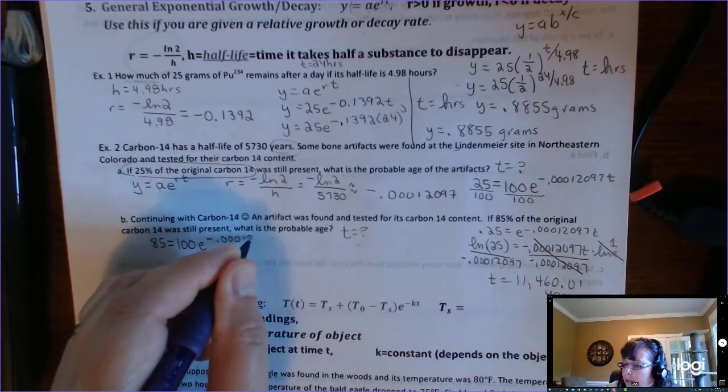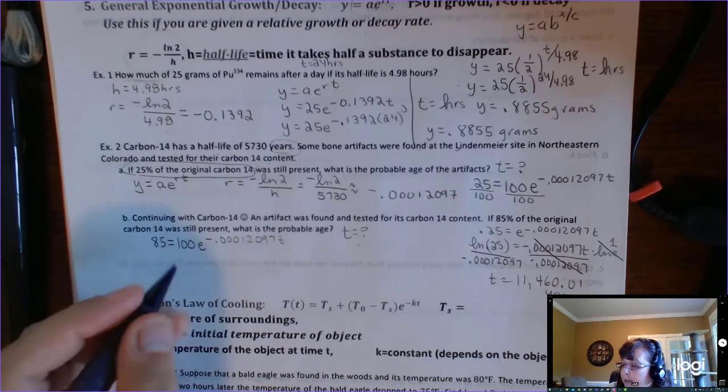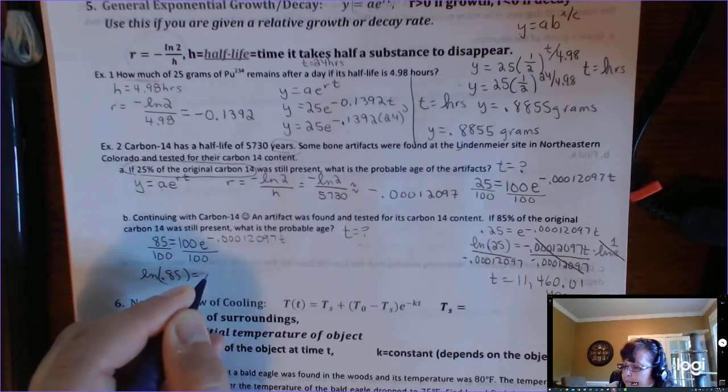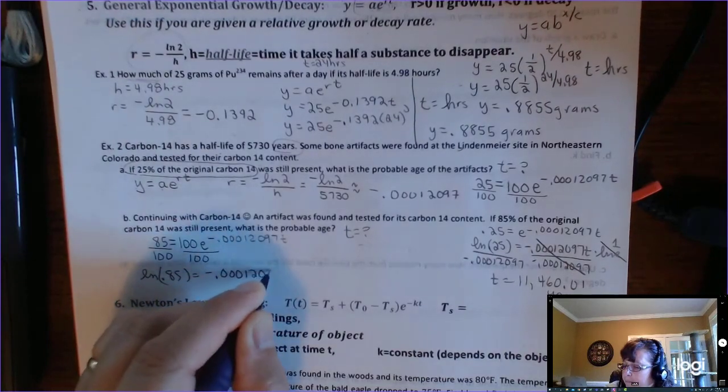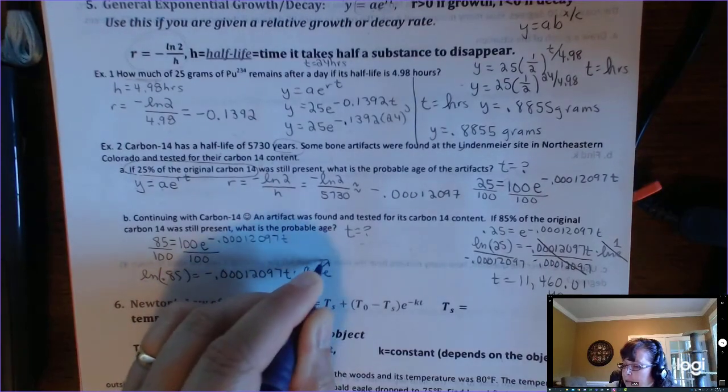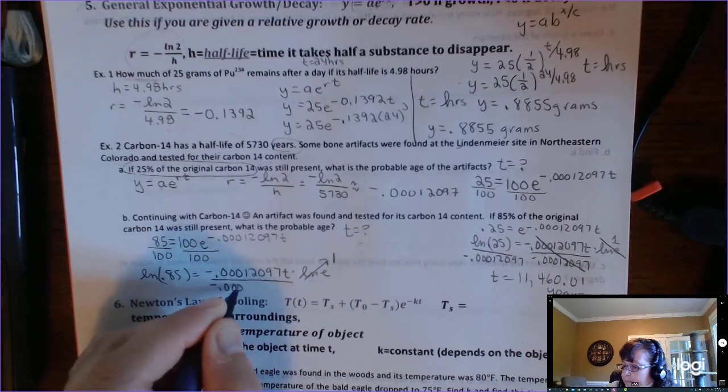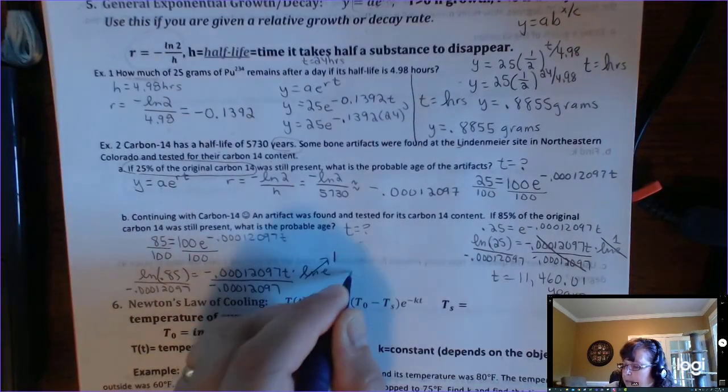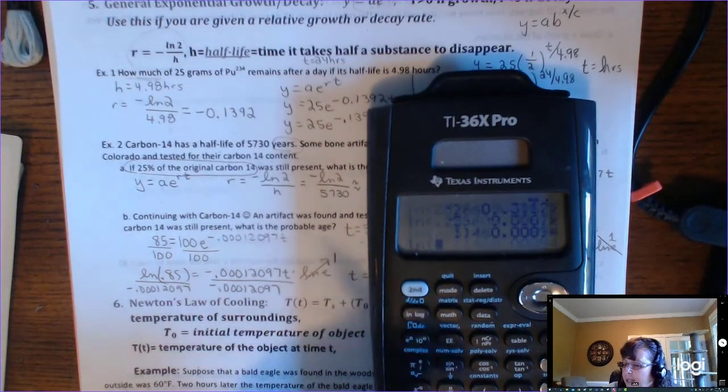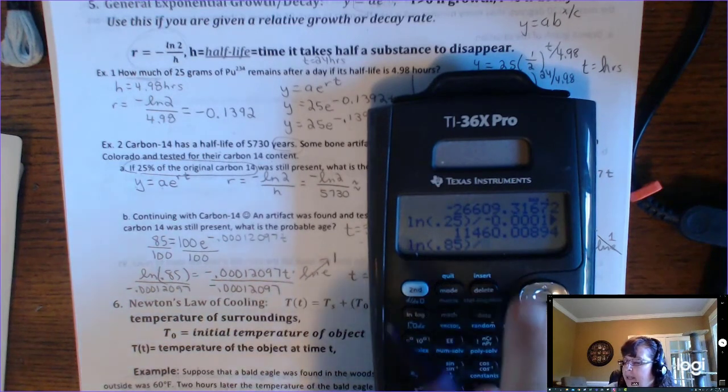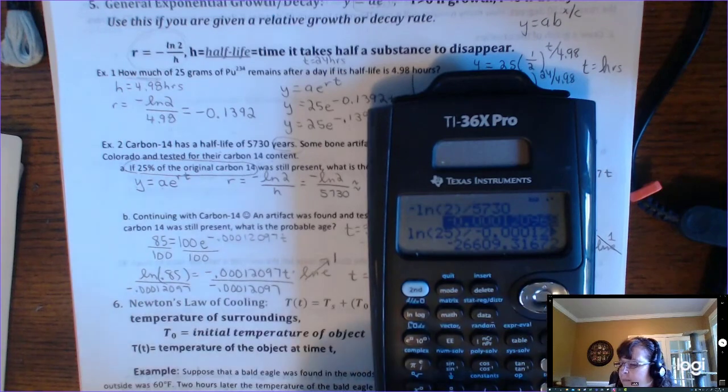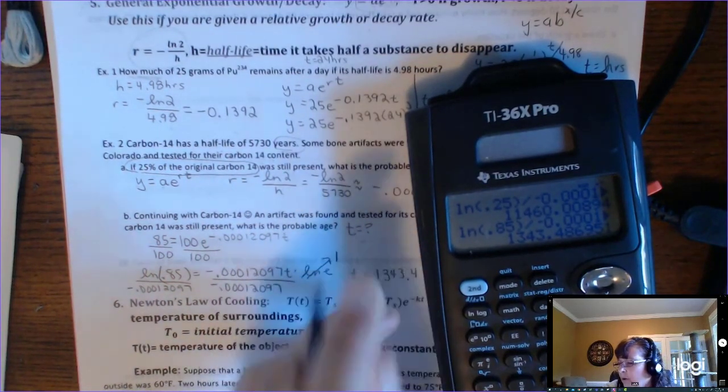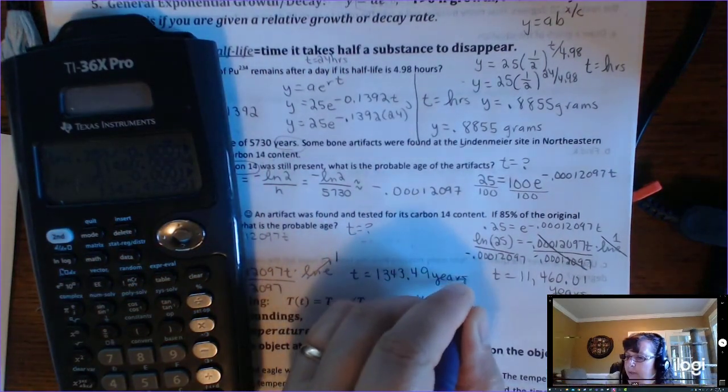E, we don't need to refigure R because it's the same element. It has the same half-life. So R is, again, going to be negative 0.00012097t. So we divide out the 100. Always divide out the initial value. Take the natural log of both sides. Use the power rule. Divide by R. And so t equals natural log of 0.85 divided by, find your R. This time you get t equals 1,343.49 years. Don't ever leave your unit off.